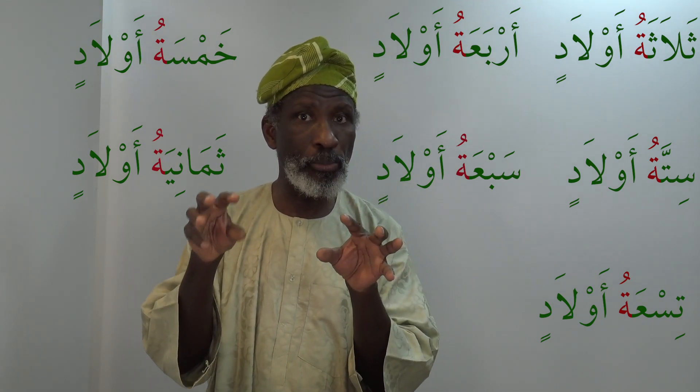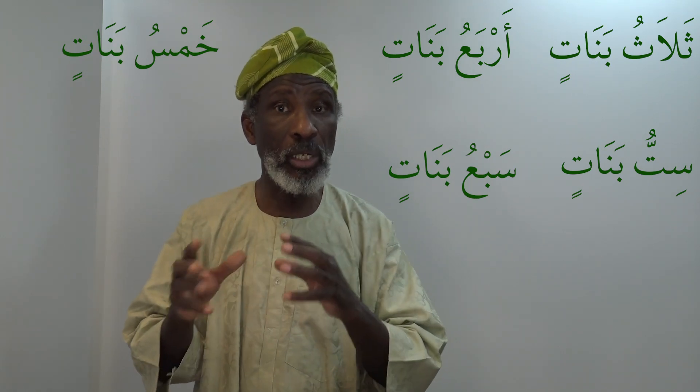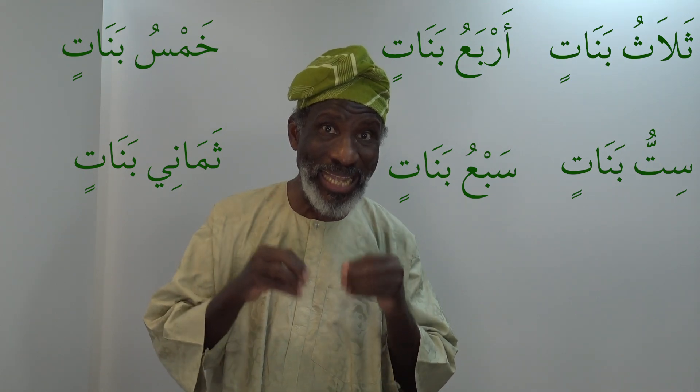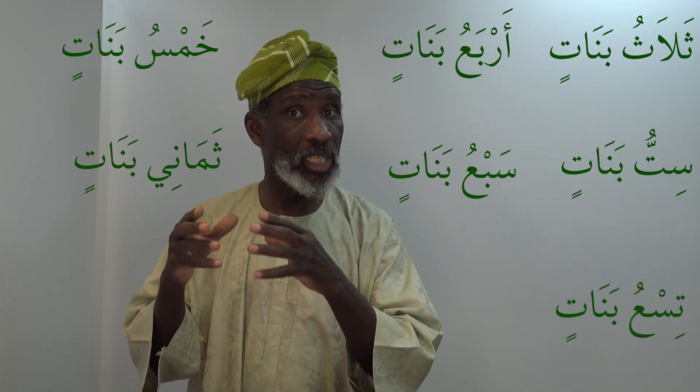If you are counting feminine nouns, you choose the masculine number. So 'three girls' — you say thalathu banatin. Thalathu is the masculine number. Similarly: arba'u banatin — four girls, khamsu banatin — five girls, sittu banatin — six girls, sab'u banatin — seven girls, thamani banatin — eight girls, and so on.